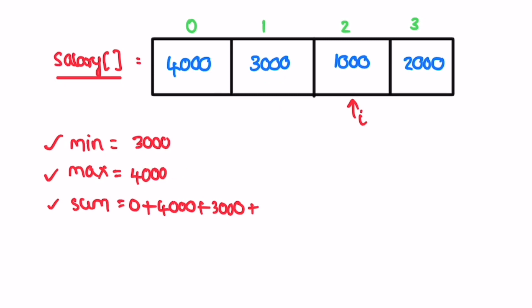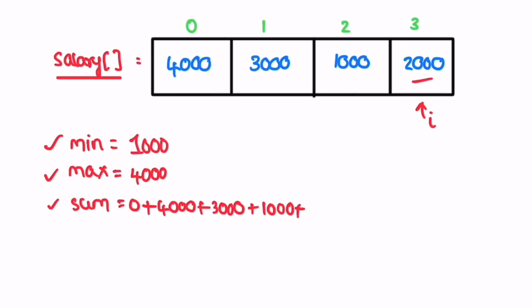At the next element 1000: 1000 is less than 3000 so we update min to 1000. Max remains 4000. We add 1000 to sum. At the next element 2000: min remains 1000 since 1000 is less than 2000. Max remains 4000 since 4000 is greater than 2000. We add 2000 to sum.